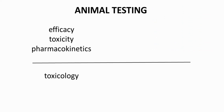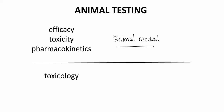Testing efficacy in animals requires an animal model of the disease. Some diseases, like obesity, are easier to study in animals. Animal models for other diseases, like dementia or depression, are much more difficult.